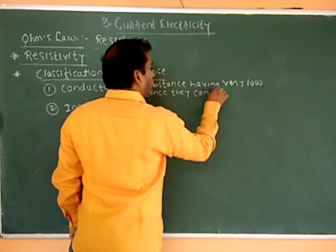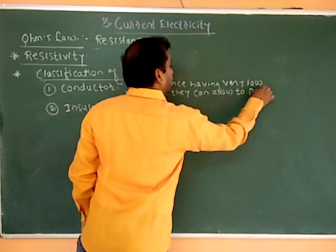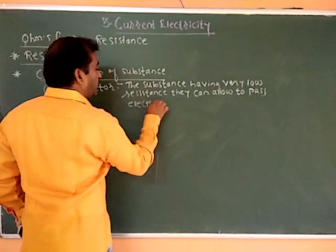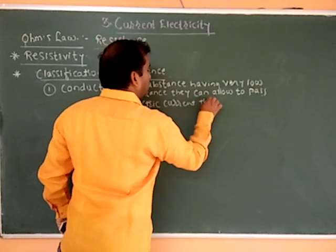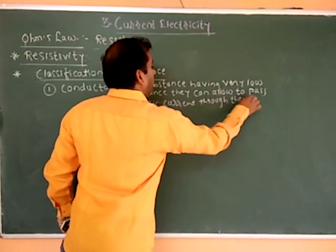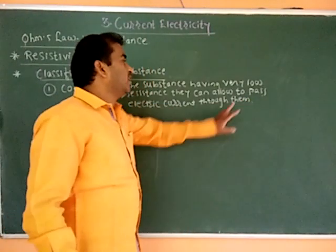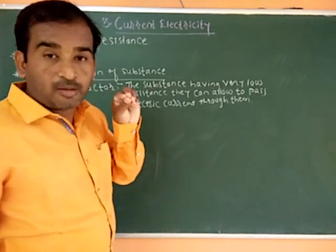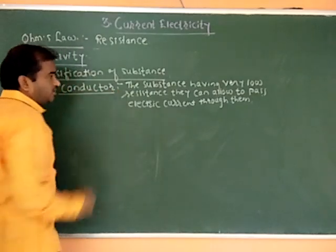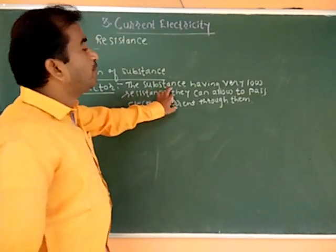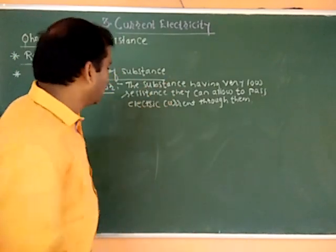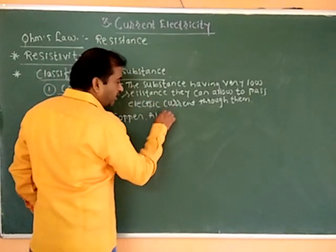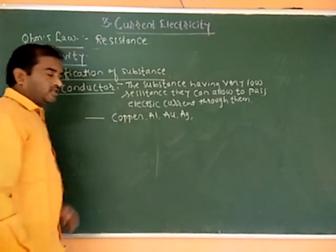Conductors allow electric current to pass through them because their resistance is low. Examples of conductors include copper, aluminum, gold, and silver.